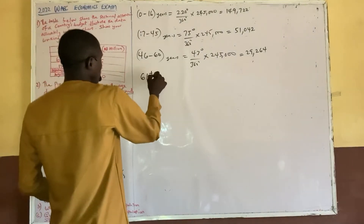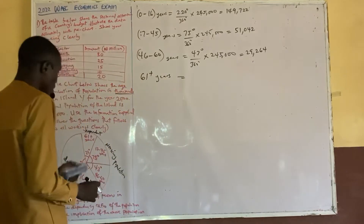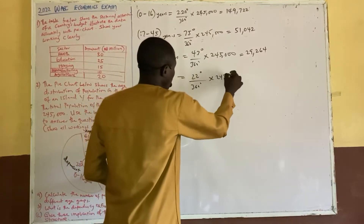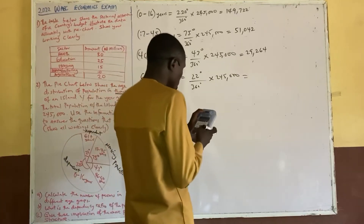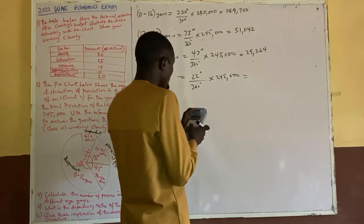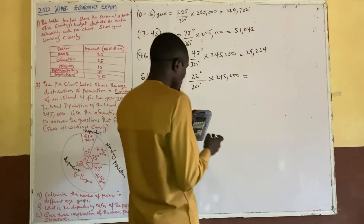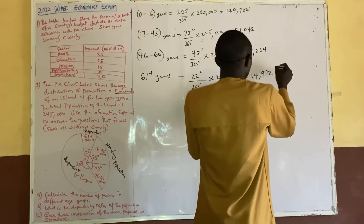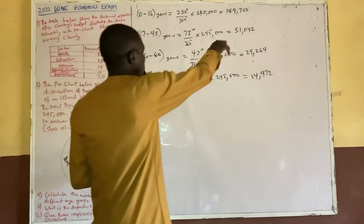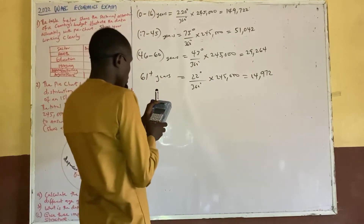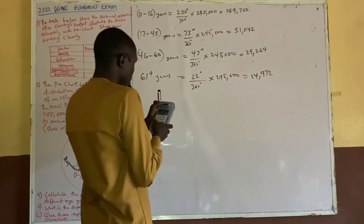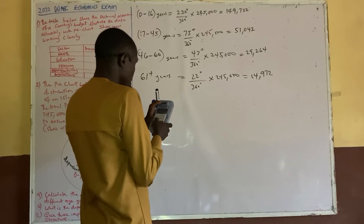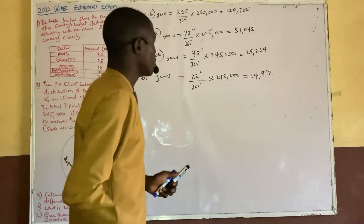The last group is 61 plus years. So we have 22 degrees over 360 times 245,000. That gives us 14,972 persons. This is the older population. When you add all of them together — 149,722 plus 51,042 plus 29,264 plus 14,972 — you get 245,000. Everything adds up to 245,000 persons.